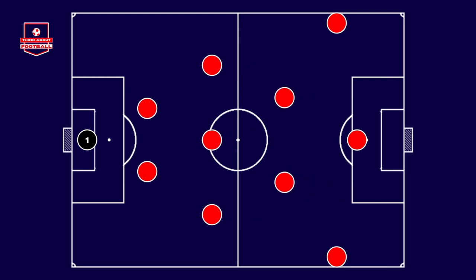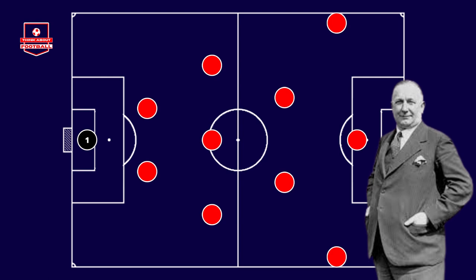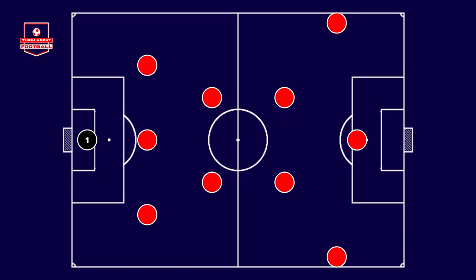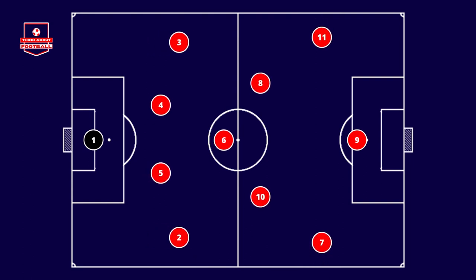The WW was later adapted by Chapman into the famous WM, which was a 3-2-2-3, creating the square in midfield mentioned in the previous video on this channel. These systems are no longer used in their original form but have been reinvented and are used during attacking phases by contemporary football teams.